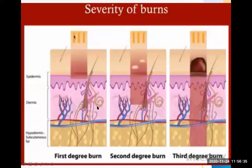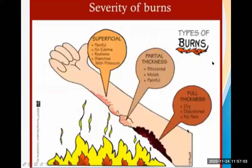To summarize the three burn depths: superficial or first degree burn affects only the epidermis — it is painful, looks red, blanches under pressure, and has no edema or blisters. Partial thickness or second degree burn involves the dermis as well — it is painful, moist, and has blisters. Full thickness or third degree burn involves epidermis, dermis, and hypodermis — it appears dry and leathery and is painless.